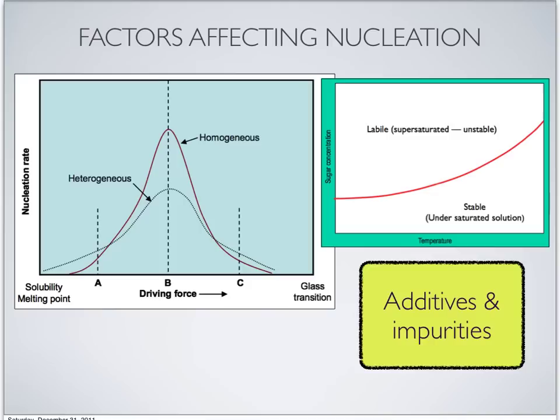The final factor that can affect nucleation is additives or impurities. Ingredients that influence crystallization may be specifically added to the formulation or present as impurities in other ingredients. Sometimes ingredients are added to foods to help control crystallization — for example, in hard candy, glucose syrup can be added to slow down the crystallization of sucrose. Addition of seed materials is an example where an additive can promote crystallization.